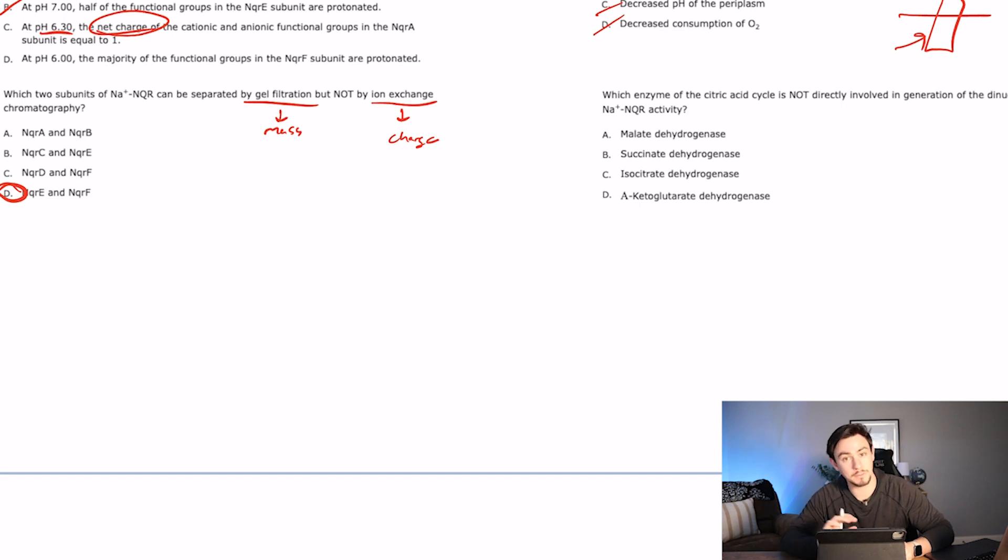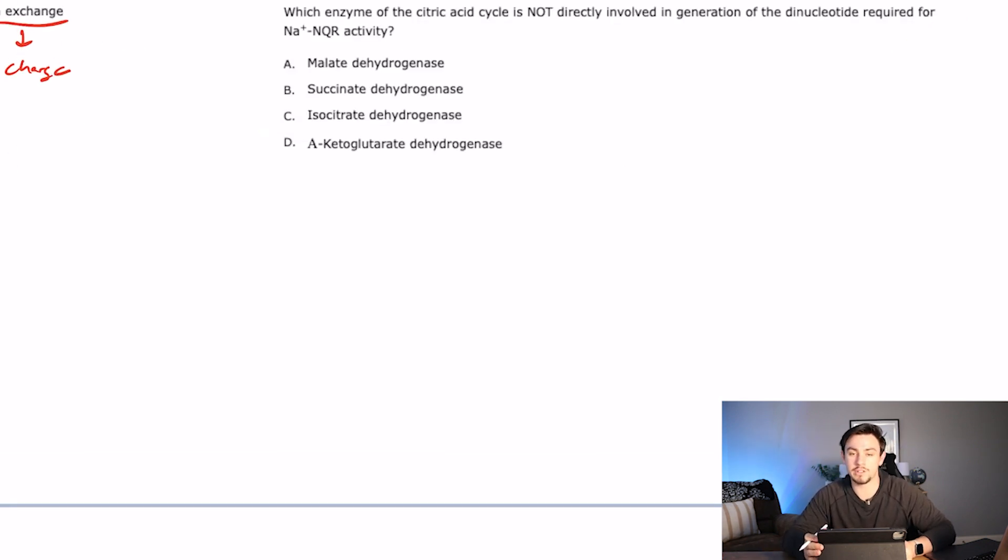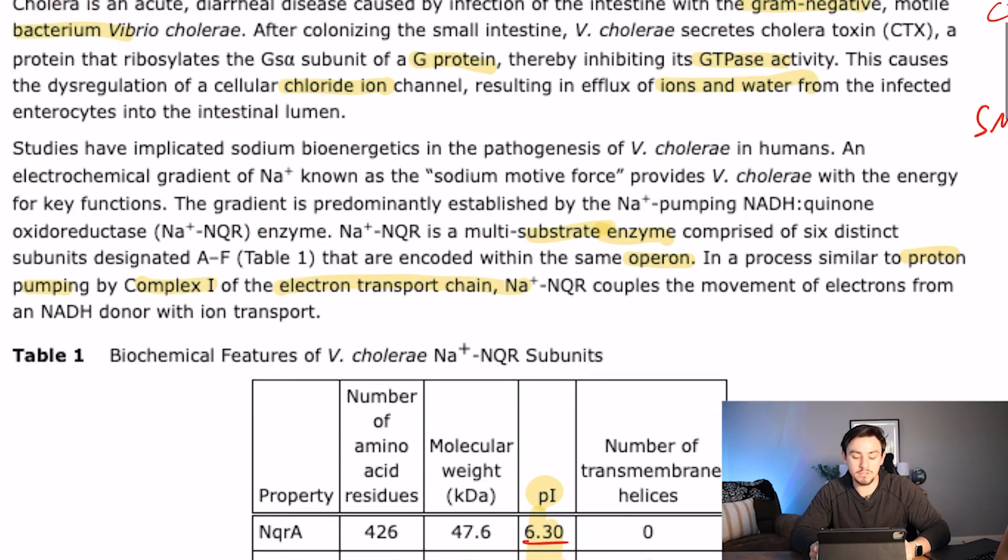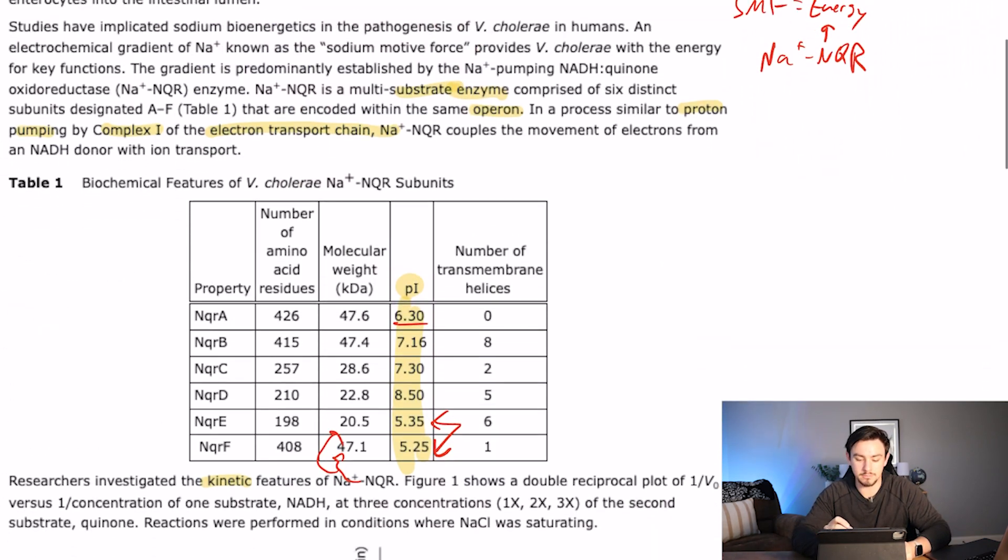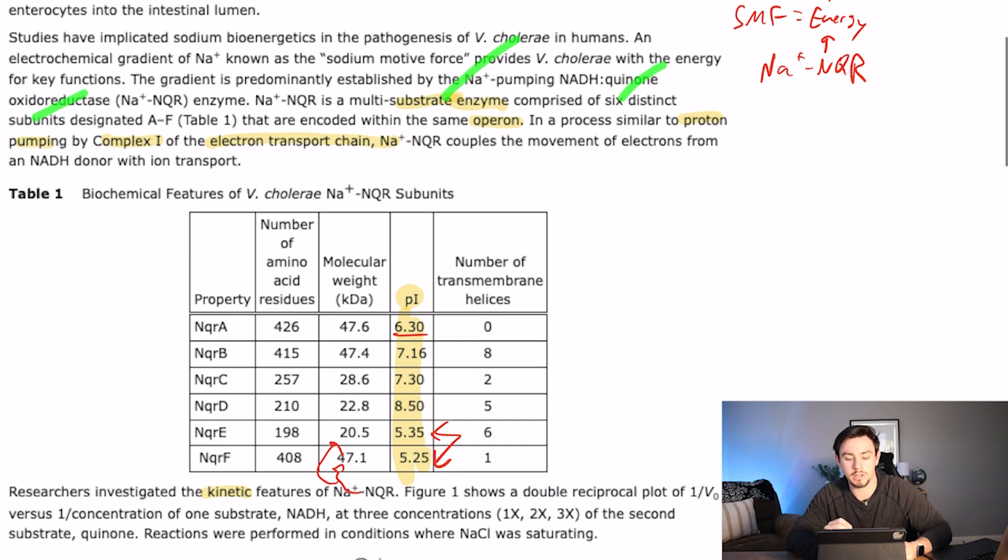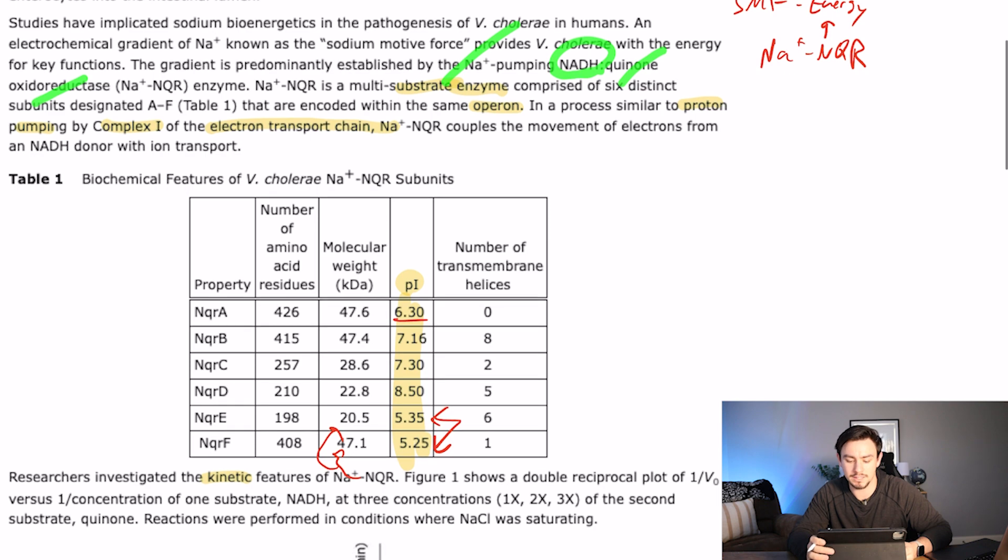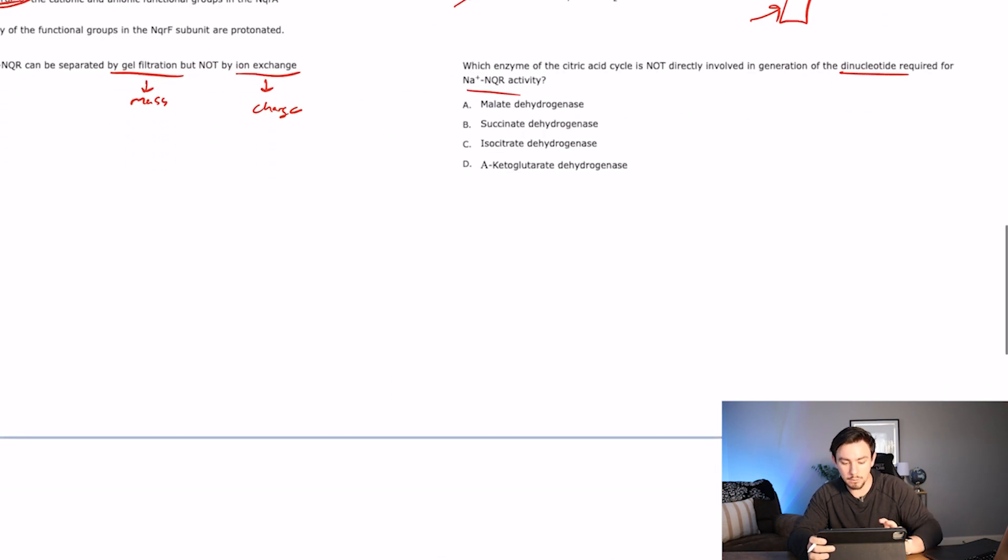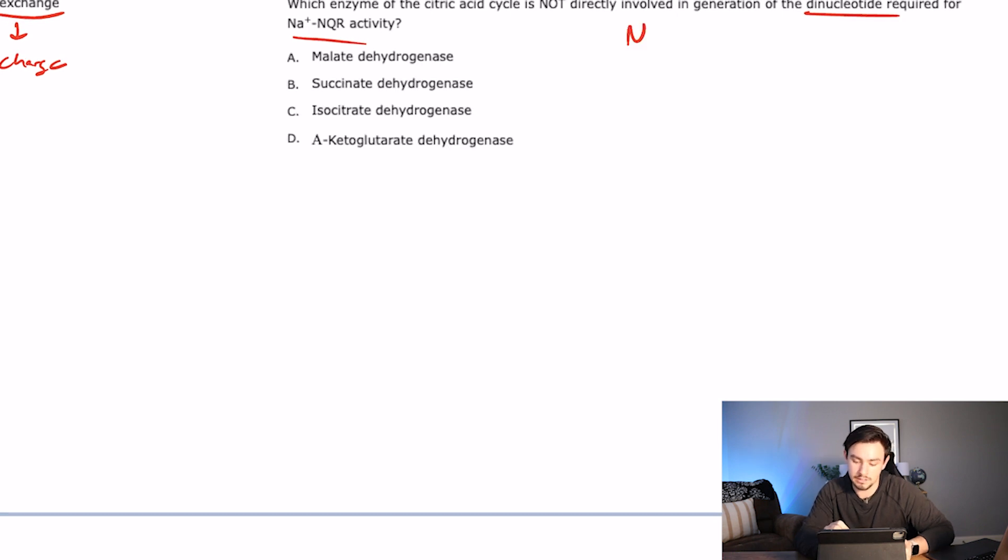And number last is which enzyme of the citric acid cycle is not directly involved in generation of the dinucleotide required for the activity here? So what is the dinucleotide required for this activity? Well, what does it tell us is required? Even if you don't know what a dinucleotide is, what is required for this enzyme? It says we require sodium, NADH, and then quinone oxidoreductase. So which of these sounds more like a nucleotide? Sodium is an ion. Quinone oxidoreductase, that's obviously some kind of protein or enzyme. And then NADH, which is like nicotinamide or something like that, that is a dinucleotide. So now we're rephrasing this question as which of these enzymes in the citric acid cycle is not directly involved in taking NAD plus and making it NADH.